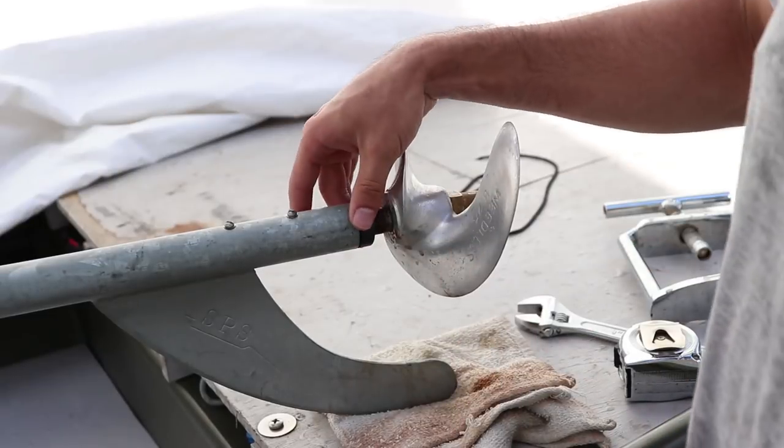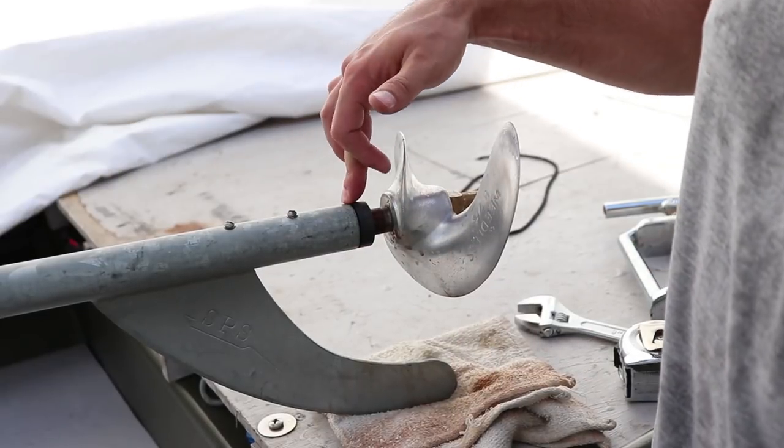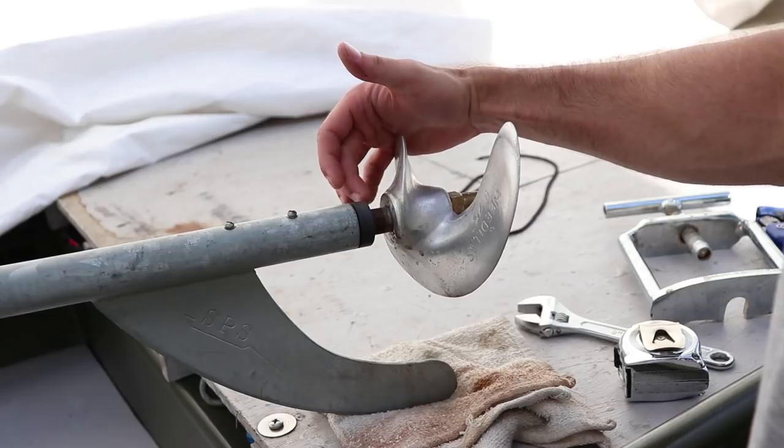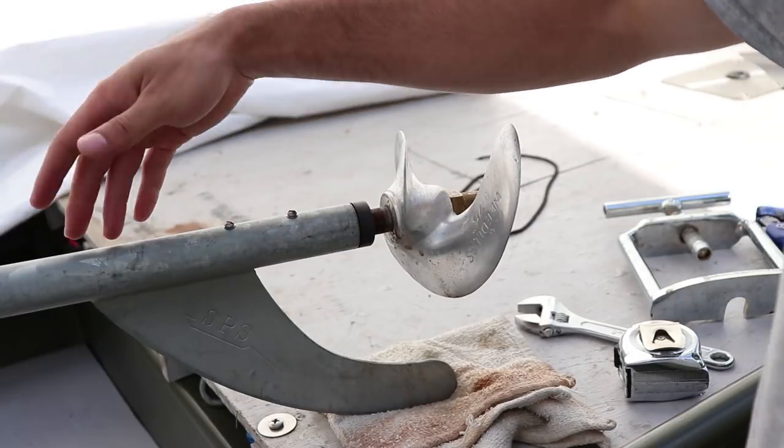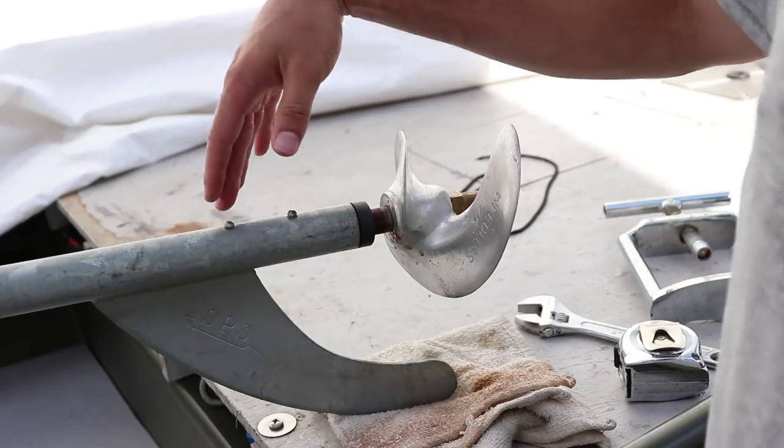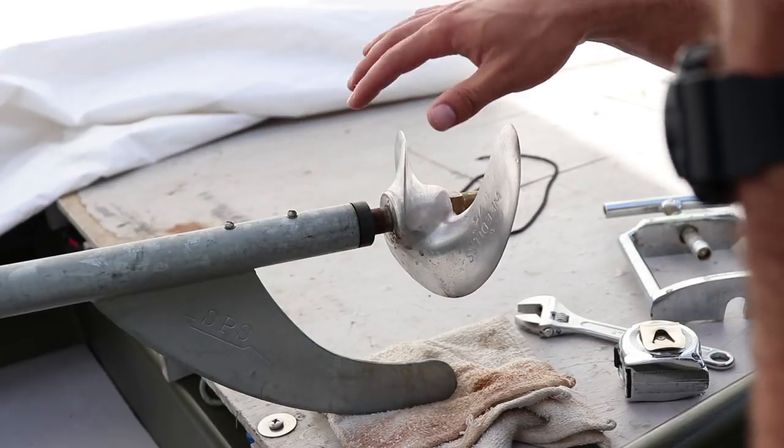Alright, so this is one very useful trick to use if you need this weedless. The problem is that weeds wrap up here and water can't go in here and help cool down and lubricate the bushings that are in here, and especially this one.